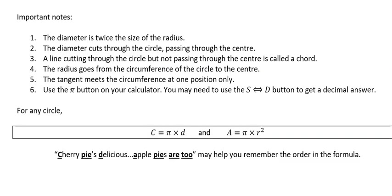A couple of important things. The diameter is twice the size of the radius. The diameter cuts through the circle, passing through the center - it goes from one side of the circle to the other going through the center. A line cutting through the circle but not passing through the center is called a chord, from two points on the edge of the circle. The radius goes from the circumference to the center. A tangent meets the circumference at one point only - it just touches - and very importantly, it has the same gradient.